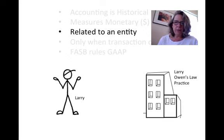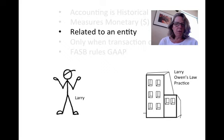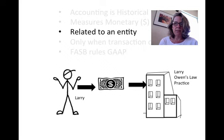This is a solution to the Larry Owen problem that we did in class. I wanted to start with this idea of entity, because it's pretty important in this example that we realize Larry is separate from his law practice. Larry gives money to his law practice — that's a minus for Larry, but it's a plus in cash for Larry Owen's law practice. So we are doing the accounting for his law practice.